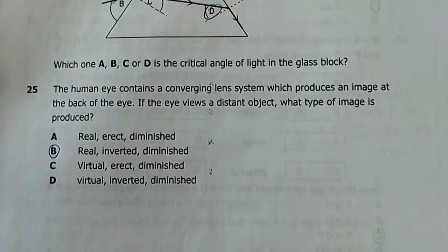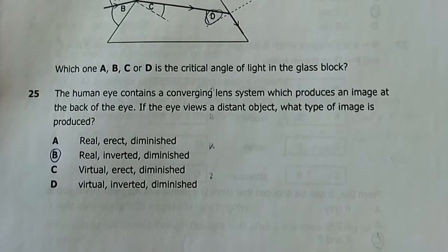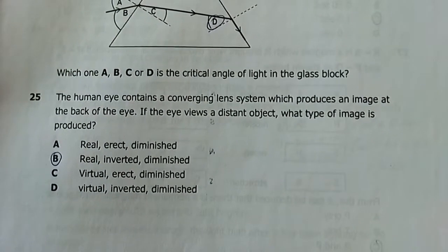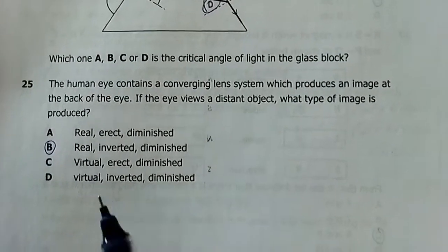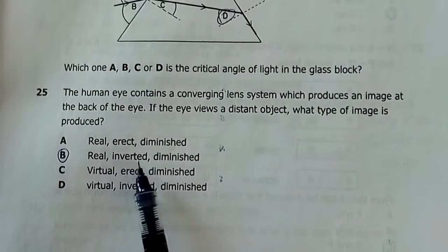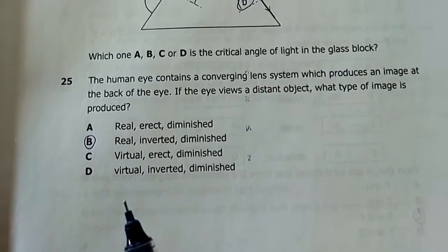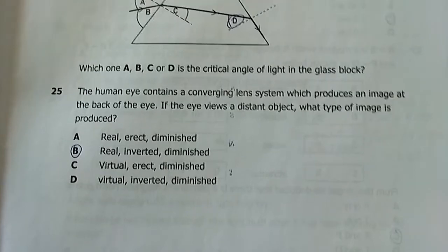Question 25: The human eye contains a converging lens system that produces an image at the back of the eye. For a distant object, the image produced is real, inverted, and diminished.